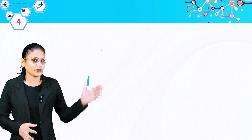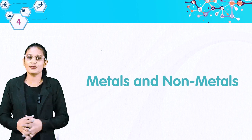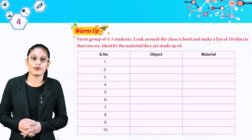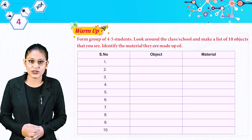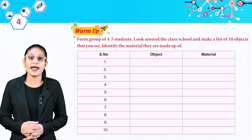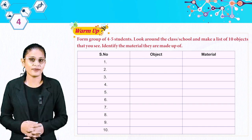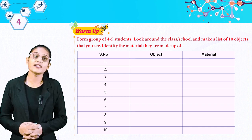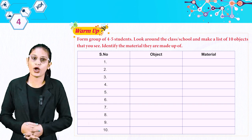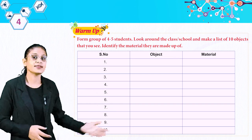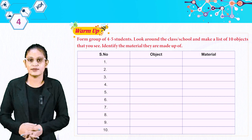Welcome to the class, students. I am here to teach you Chapter 4: Metals and Non-Metals. Let's warm up — form groups of 4 to 5 students, look around the class and school, and make a list of 10 objects that you see. Identify the material they are made up of. You can make the list and do it by yourself.